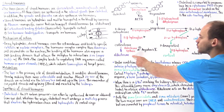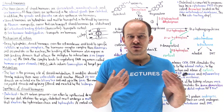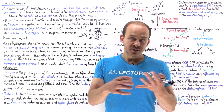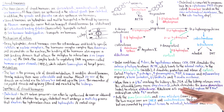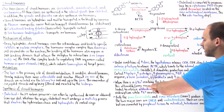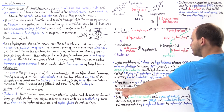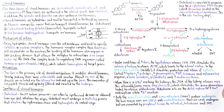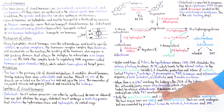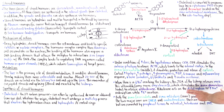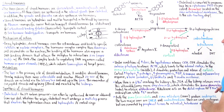Aldosterone acts on the distal nephron to increase reabsorption of sodium, allowing reabsorption of more water and increasing blood pressure. It also causes secretion of potassium, which can cause hypokalemia. In summary: low sodium → juxtaglomerular apparatus releases renin → more angiotensin 2 → zona glomerulosa releases more aldosterone via increased aldosterone synthase activity → increased sodium reabsorption and potassium secretion in the distal nephron.